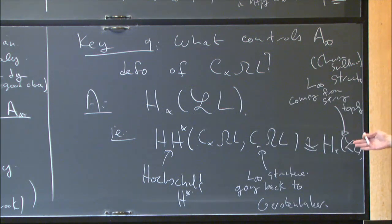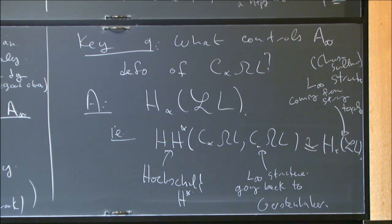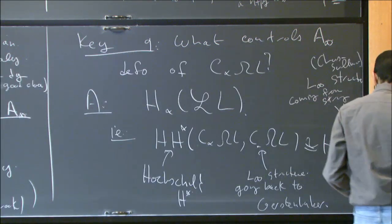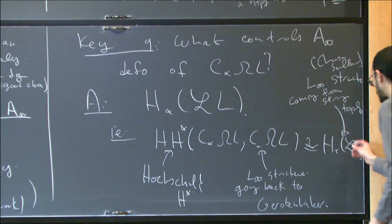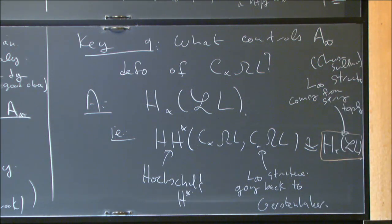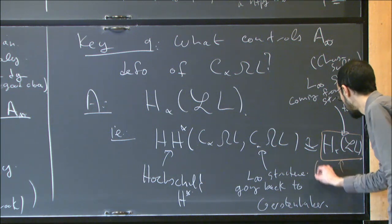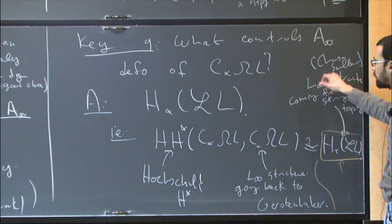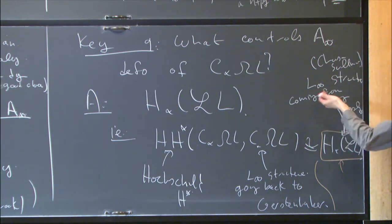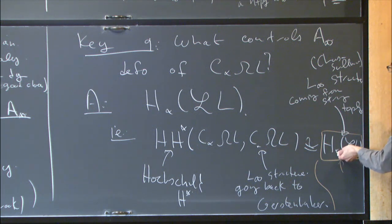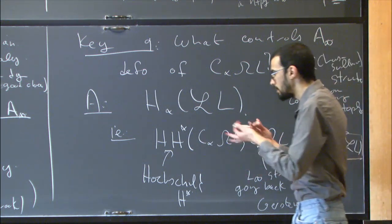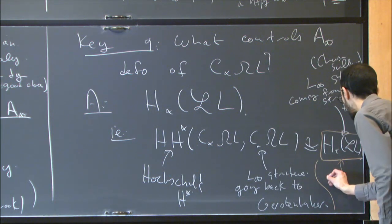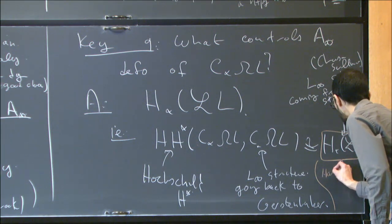Is this a theorem? The answer is no, because there is no convenient model for the chain-level theory that would give rise to the L-infinity structure. If you just want the bracket, there's no problem defining it here. But the higher products require machinery, and it's hard to get good models for this L-infinity structure.